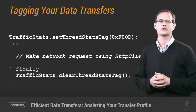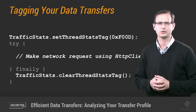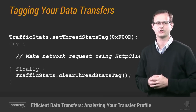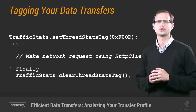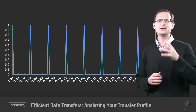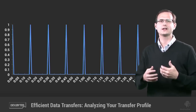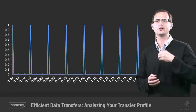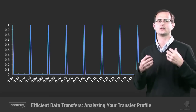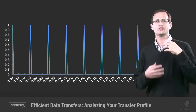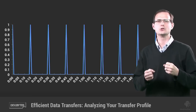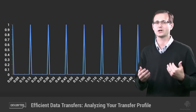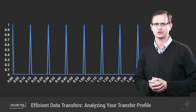Once you've generated a representation of your app's transfer profile, you can start analyzing it for battery inefficiencies. The most important thing to look for are any periodic transfers. Any regular pattern of repeating transfers will cause a correspondingly regular pattern of radio activations, so you're effectively setting the minimum level of battery drain. The shorter the period between updates, the higher the battery drain.